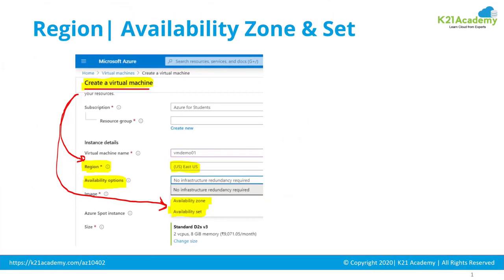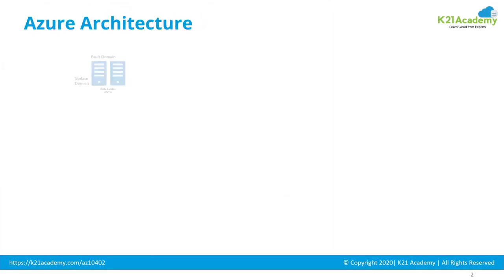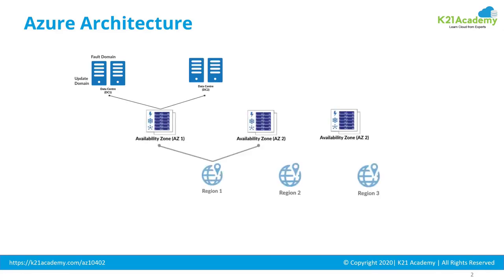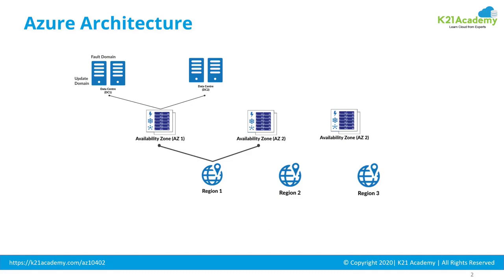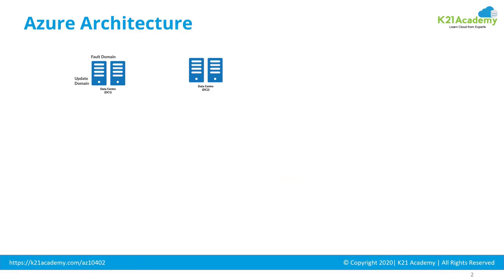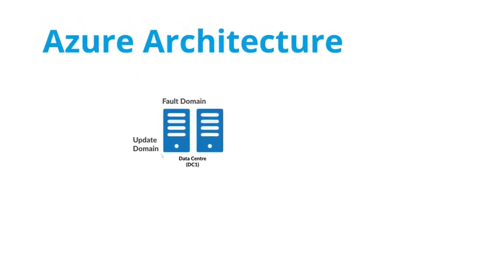Before I explain what availability zone or availability set means, let's first look at the architecture of Microsoft Azure. On a high level, you have a geography, which is made from multiple regions. Regions are made from one or more availability zones, and an availability zone is nothing but a collection of data centers. Within a data center you have server racks, and each server rack is called a fault domain. Within these server racks you have servers, which are update domains — update domain one, two, three, and four within this fault domain.